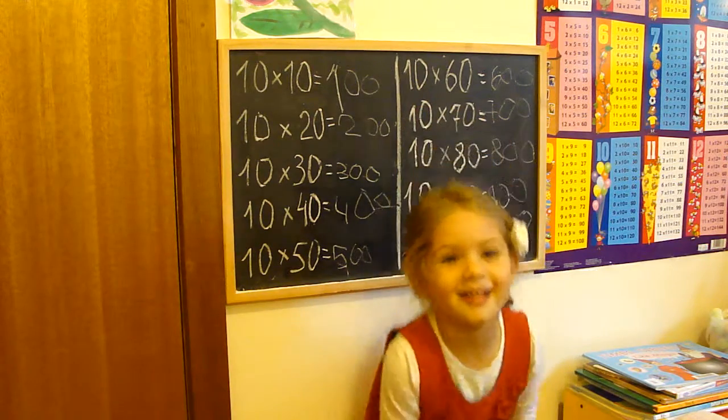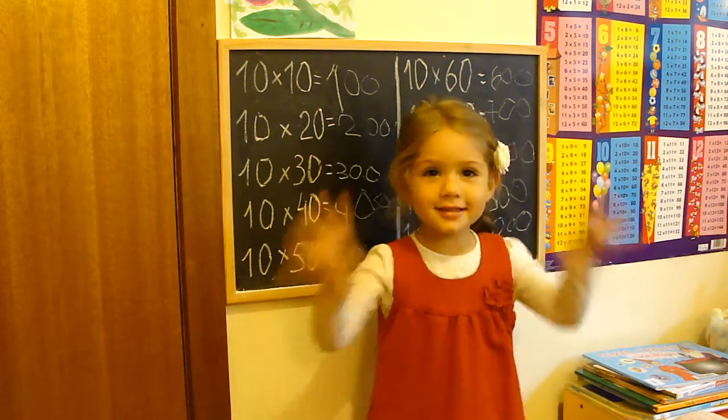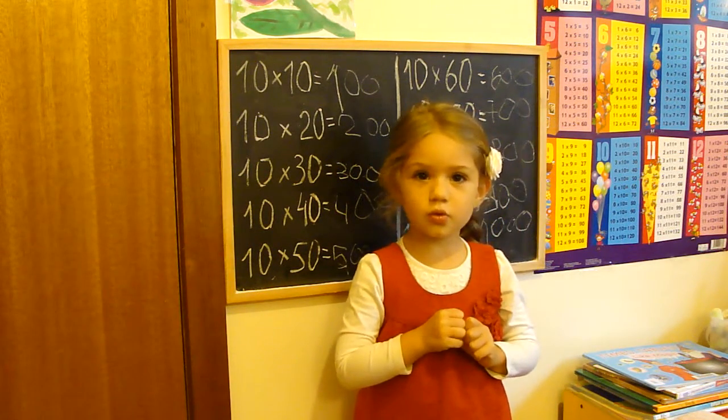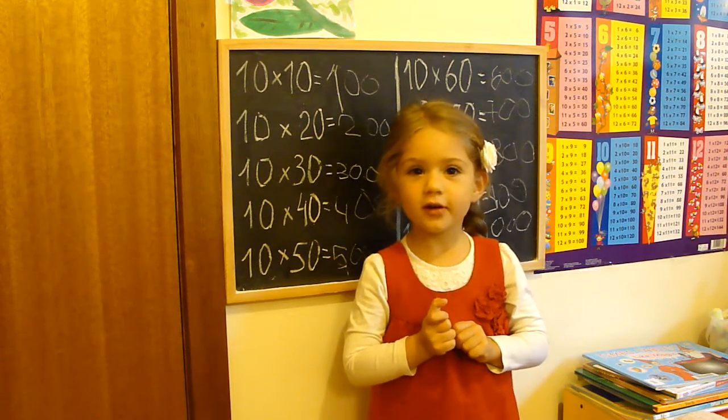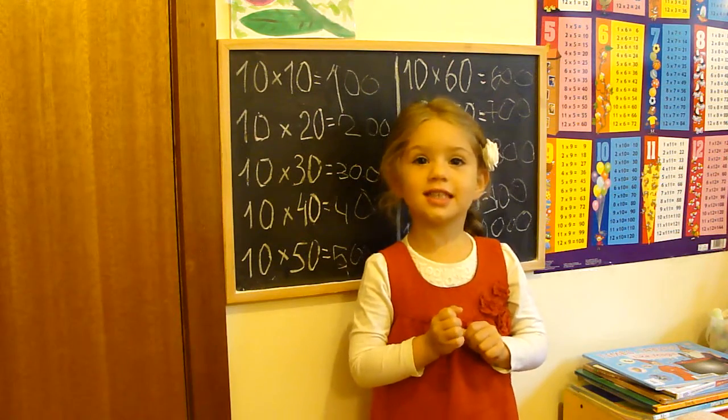10 times 1? 10 times 1? 10. Very good. 10 times 2? 20. 10 times 3? 30. 10 times 4? 40. 10 times 5? 50. 10 times 6? 60.